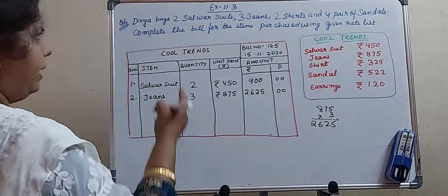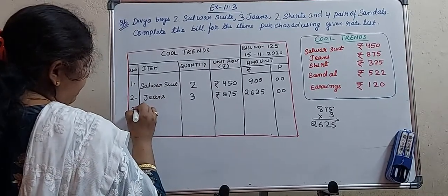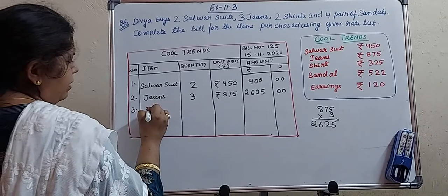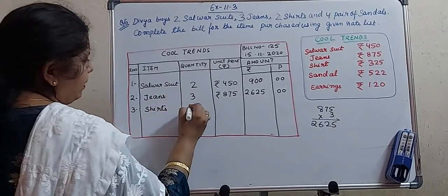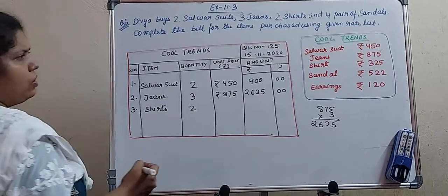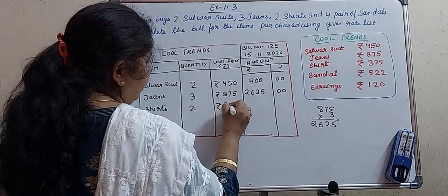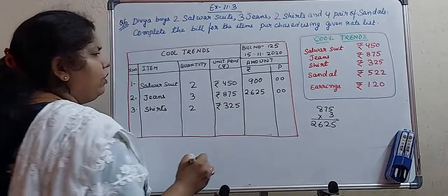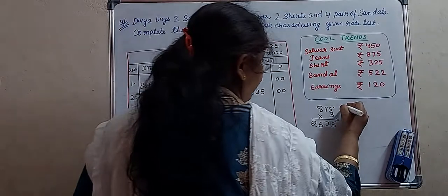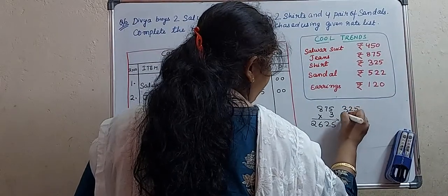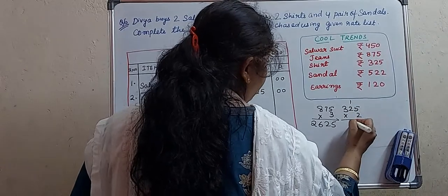The next item is 2 shirts — item number 3. The item name is shirts, quantity is 2, and the price of one shirt is ₹325. We need to multiply 325 by 2: 325 × 2 = ₹650.